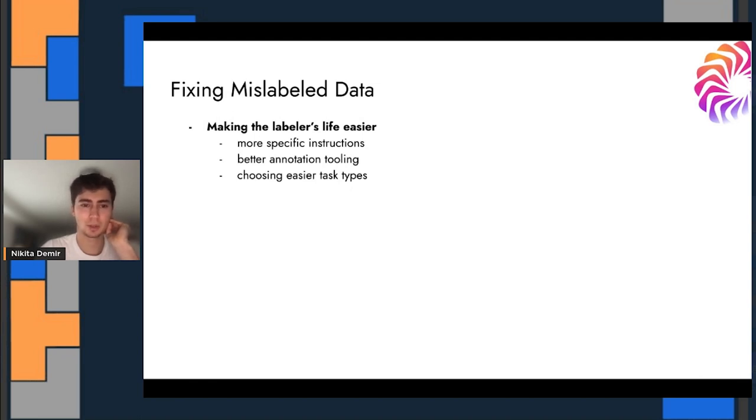And sometimes choosing easier task types, whether that's making the domain easier, like for example, limiting the number of classes. In a lot of CV datasets, there's hundreds and hundreds of classes and that can be pretty hard for labelers to efficiently choose. Looking at labeler agreement is a very common thing that the labeling platforms will hopefully automatically do for you. If there's a lot of disagreement on a label, you can then have that further reviewed and sent to even more labelers.